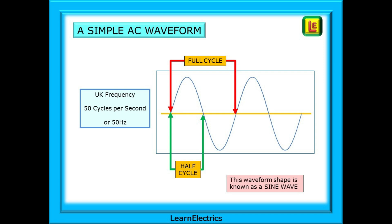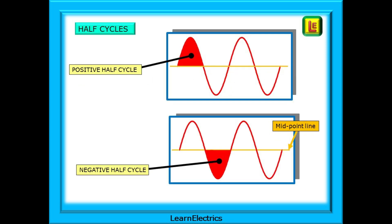Just the positive half, or just the negative half, makes up a half cycle. Half cycles matter with dimmer circuits. There are 50 full cycles per second in a waveform in the UK, and 100 half cycles. From crossing the midpoint line, shown orange here, the positive half cycle of the waveform travels in a positive direction and returns to the midpoint line. This is the positive half cycle. The negative half cycle crosses the midpoint line in a negative direction, to return to the midpoint line a few milliseconds later.